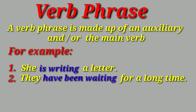Last one — verb phrase. A verb phrase is made up of an auxiliary and the main verb, or auxiliary with the main verb. For example, 'She is writing a letter' — 'is writing' is the verb phrase. 'They have been waiting for a long time' — 'have been waiting' is the verb phrase. So, a verb phrase is made up of an auxiliary or main verb.